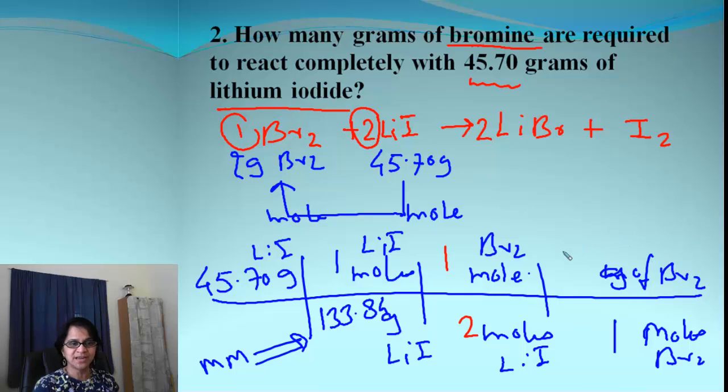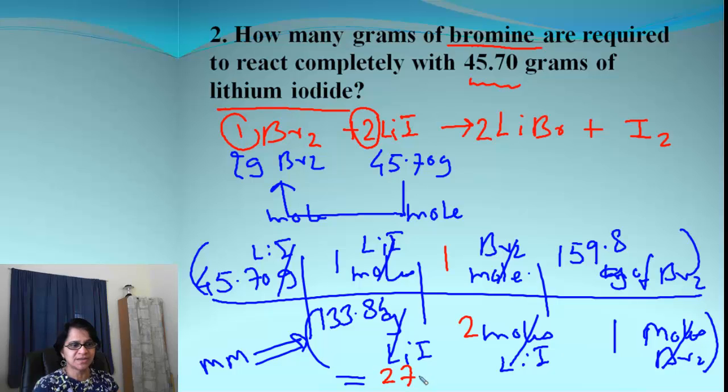Molar mass for bromine is, again, remember, it's diatomic. So it will be times 2. The atomic mass times 2. And we get 159.8. Okay. The units are cancelled. And then we multiply the numerator part. Then multiply the denominator part. And actually, you can divide. And the final answer for all of this comes to be 27.28 grams of bromine.